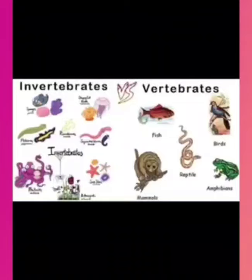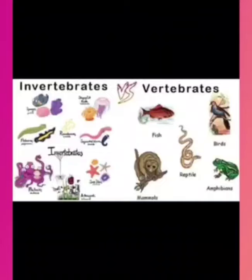Birds. All birds are differentiated by feathers on their body. They can fly in air. Some birds can swim in water. Some birds like ostrich can run fast on land but cannot fly. They have wings instead of forelimbs.